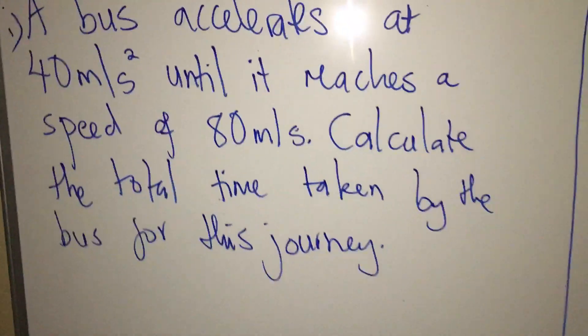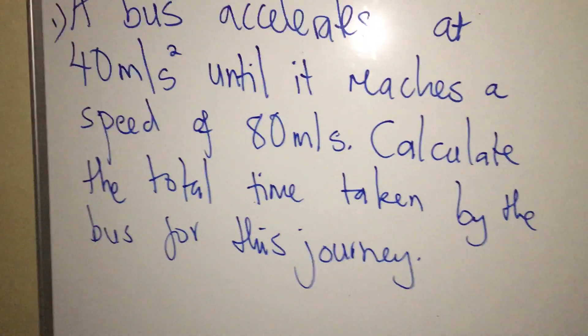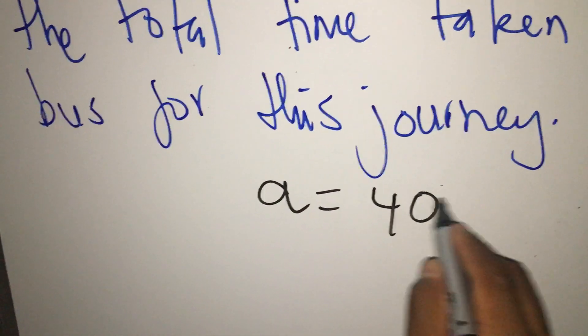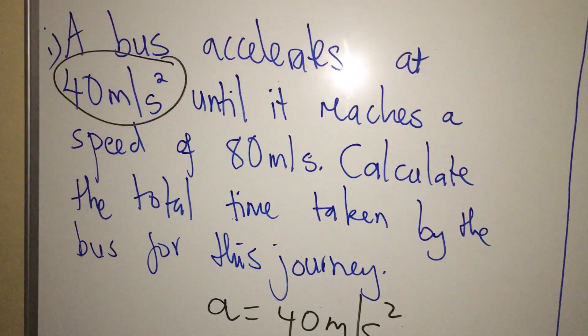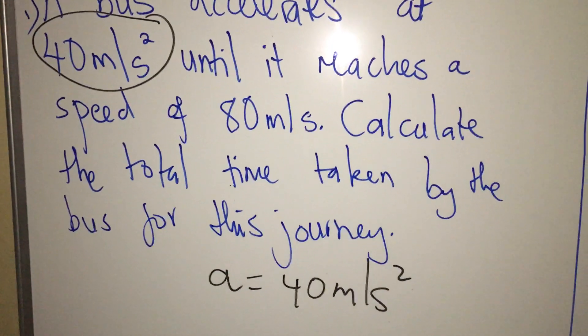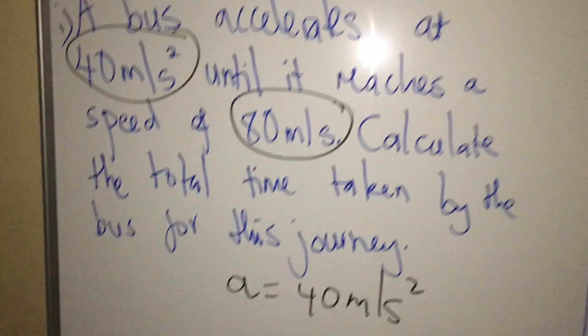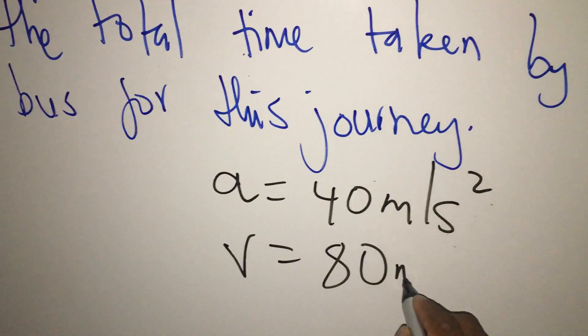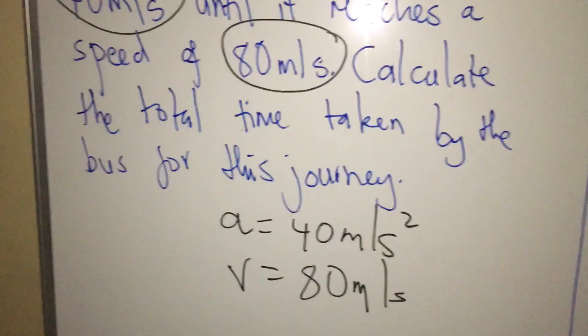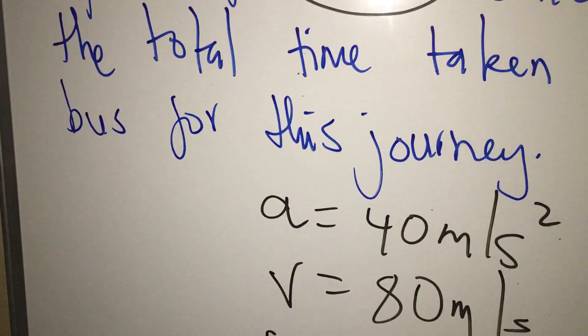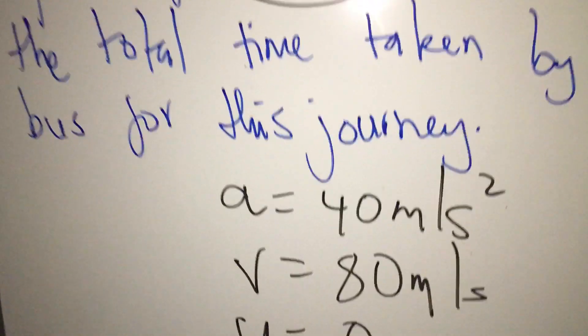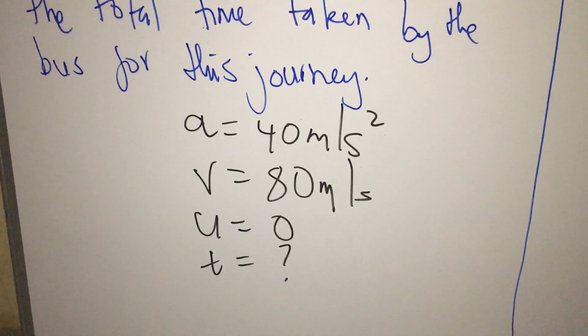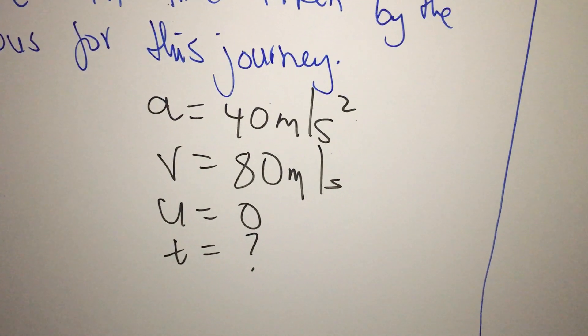We are given here the acceleration, which is 40, so I'll write acceleration equals 40 meters per second squared. What else am I given? It reaches a speed of 80 meters per second - this one is my final velocity. So I'm having my V = 80 meters per second. Am I given initial velocity? No, my U is close to zero. I'm not given T as well. So given a V, U, and T, what is the best equation that I can use from the formula?